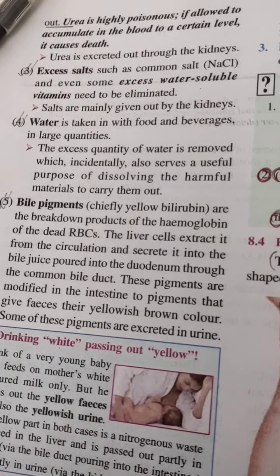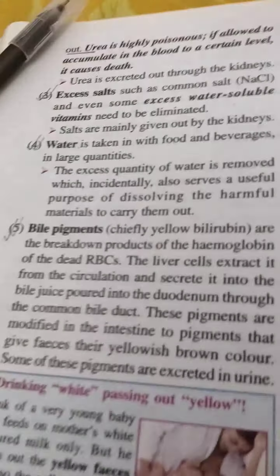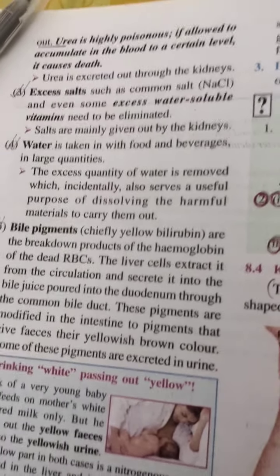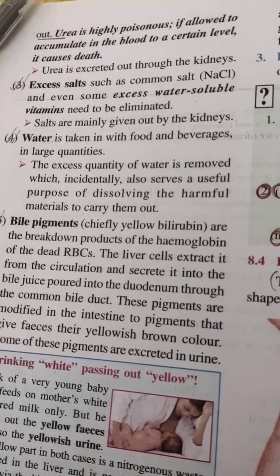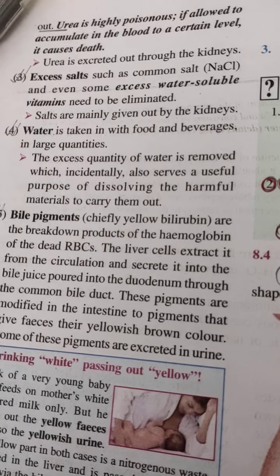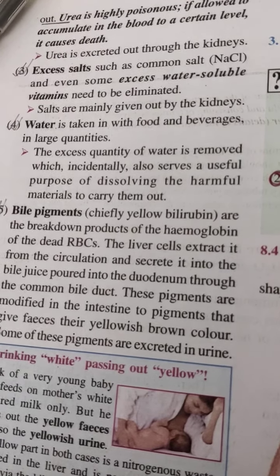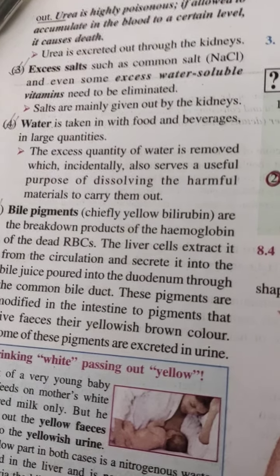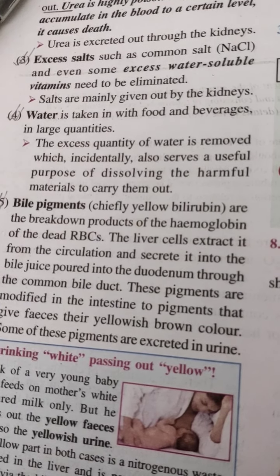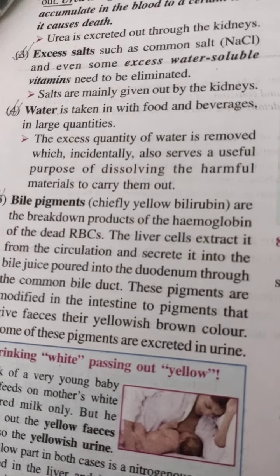Urea is highly poisonous. If allowed to accumulate in the blood to a certain level, it causes death. So urea can cause death if it accumulates in inappropriate quantities inside our body. It is excreted out through the kidneys.